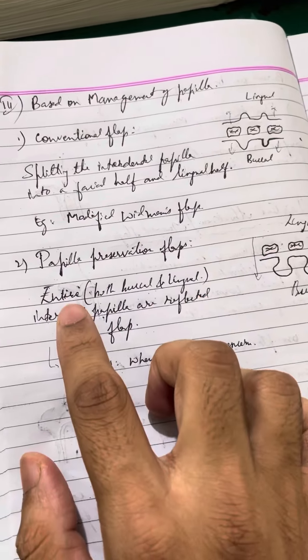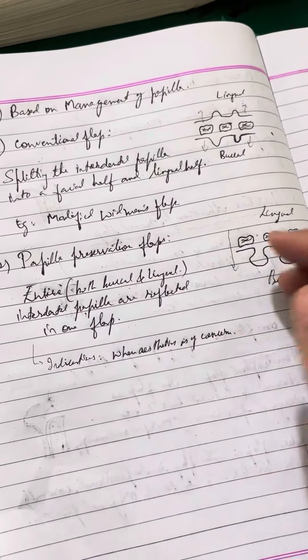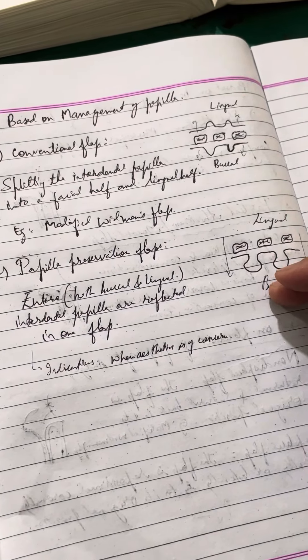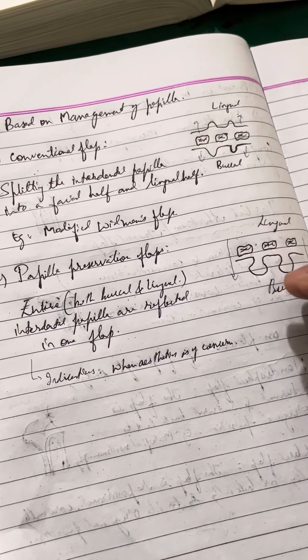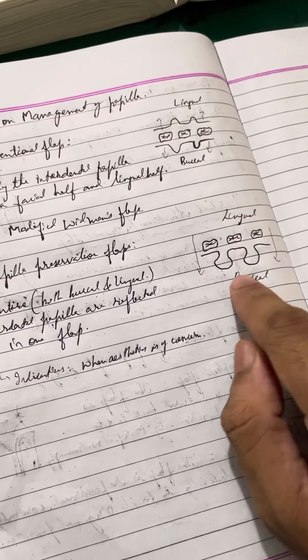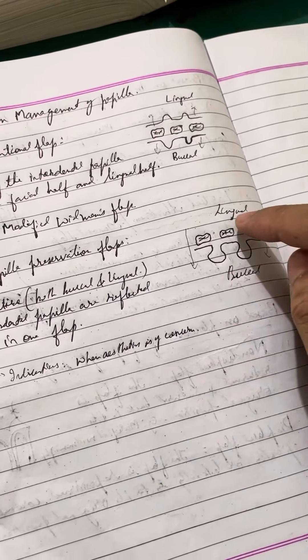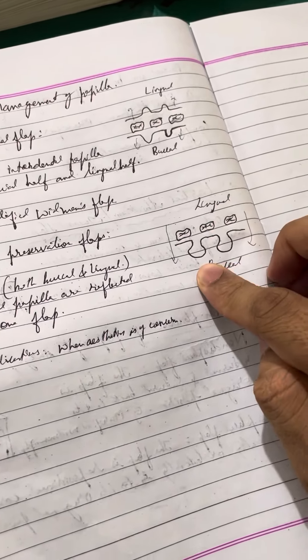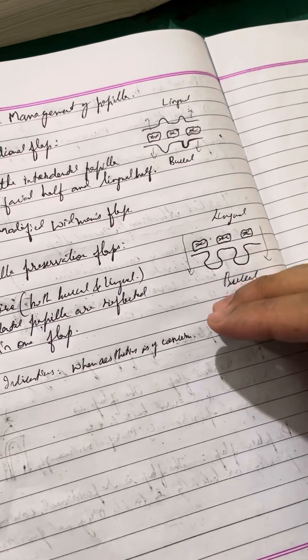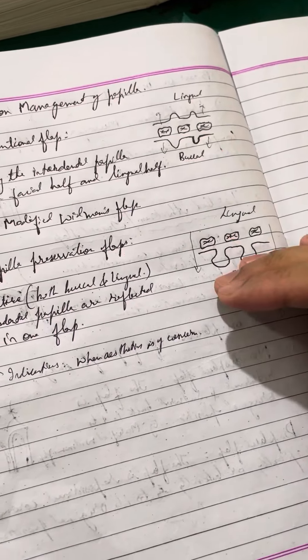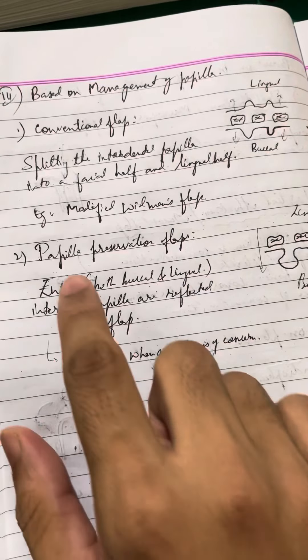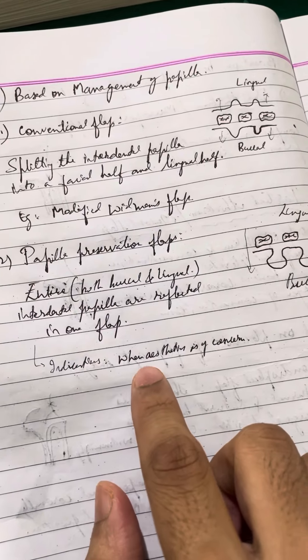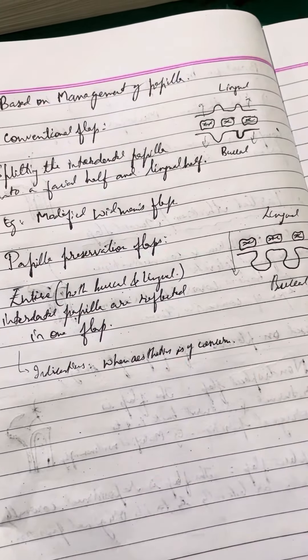Papilla preservation flap: the entire interdental papilla, both buccal and lingual, are reflected in one flap. In this diagram, you can see the lingual and buccal flap reflected into one flap on one side. Indications for papilla preservation flap: when aesthetics is of concern.